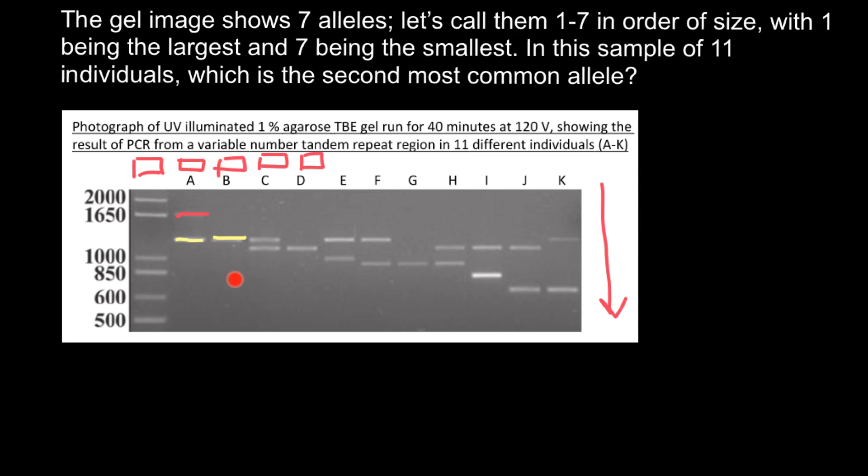And here would also be an allele of the same size. But what is interesting is that person B has only one band. That means this person has two alleles of the same size. Because two alleles have the same size, the DNA has the same length. This DNA derived from mother's side and father's side would travel the same distance.